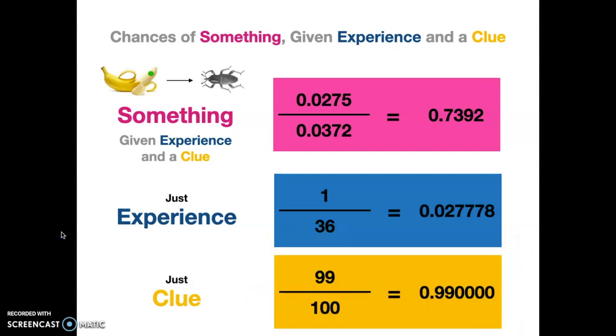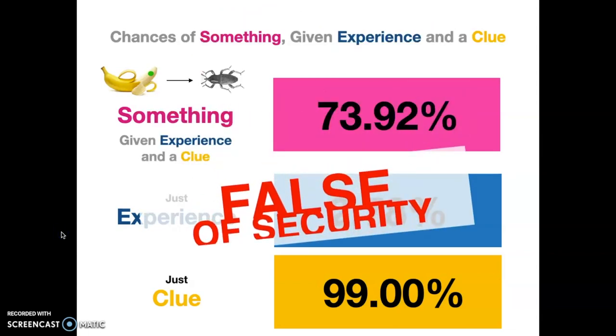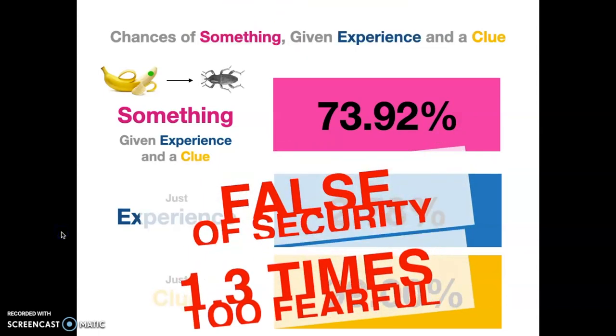If you use just that clue, turning them into percentages, we see that we have some gross miscalculations if we used our kind of regular methods. So here we got a false sense of security. Just using experience told us, yeah, no, there's only 2.78% of bananas have these bugs in them. So don't worry about it. That clue gives us additional information. But if we just use just the clue, it's still too fearful. It's 1.3 times too fearful. That again, matters when you start talking about more than just one banana decision.